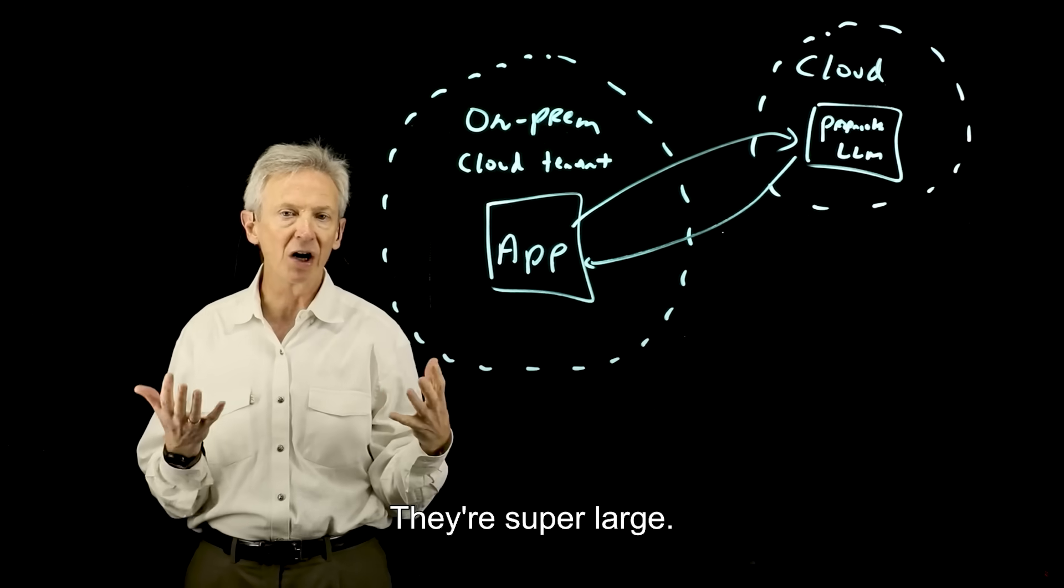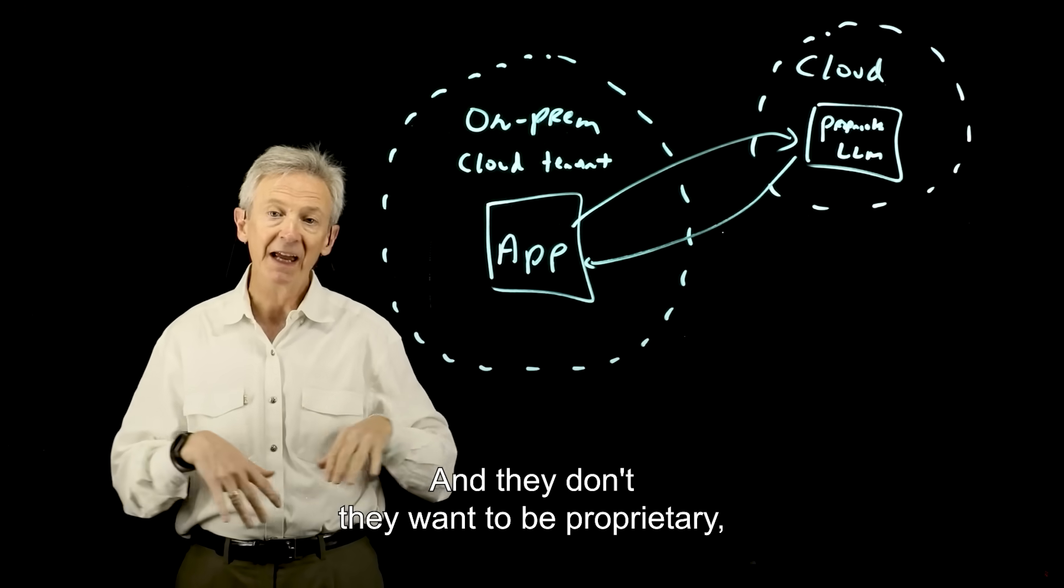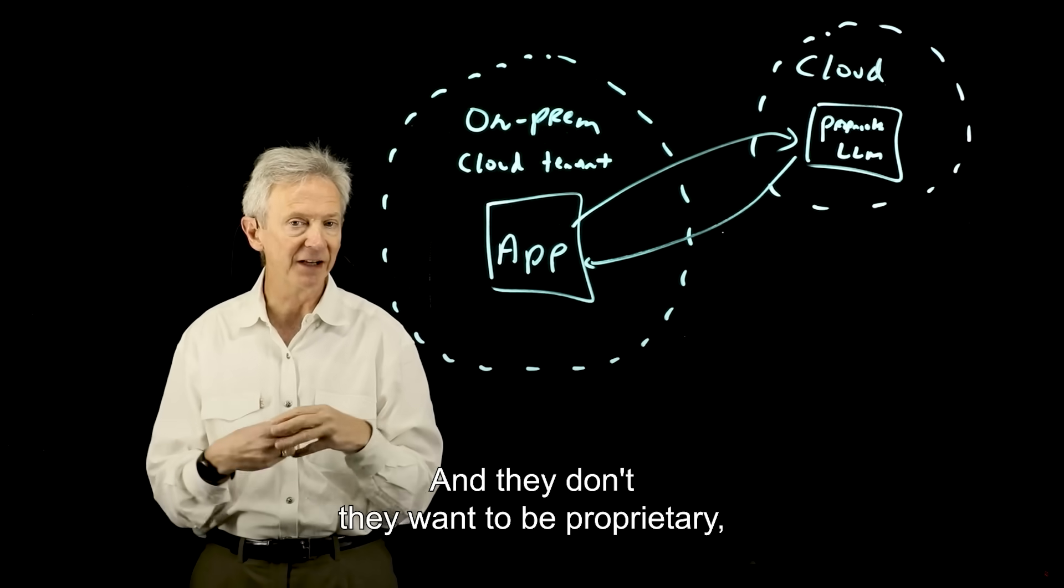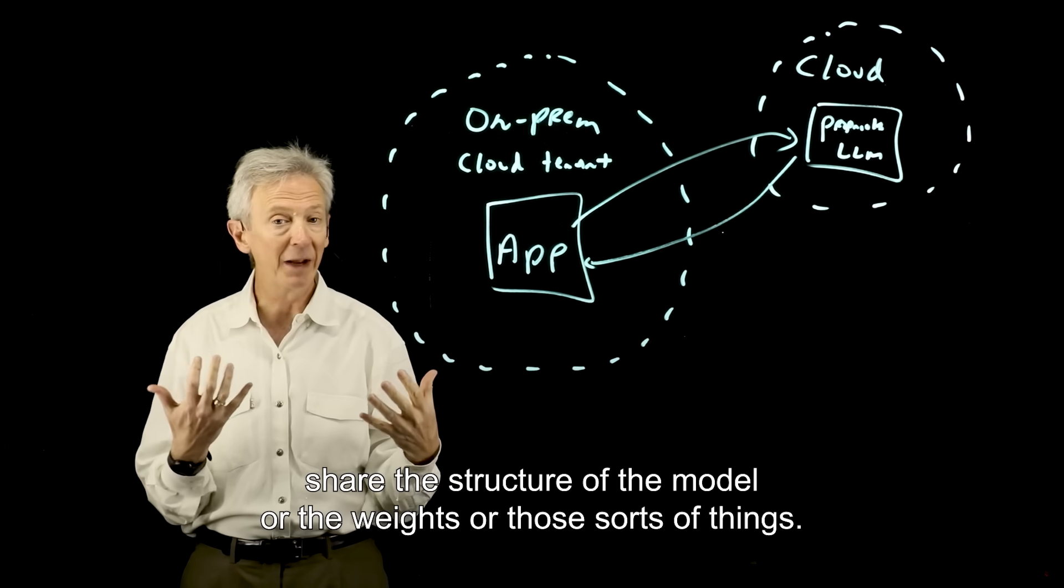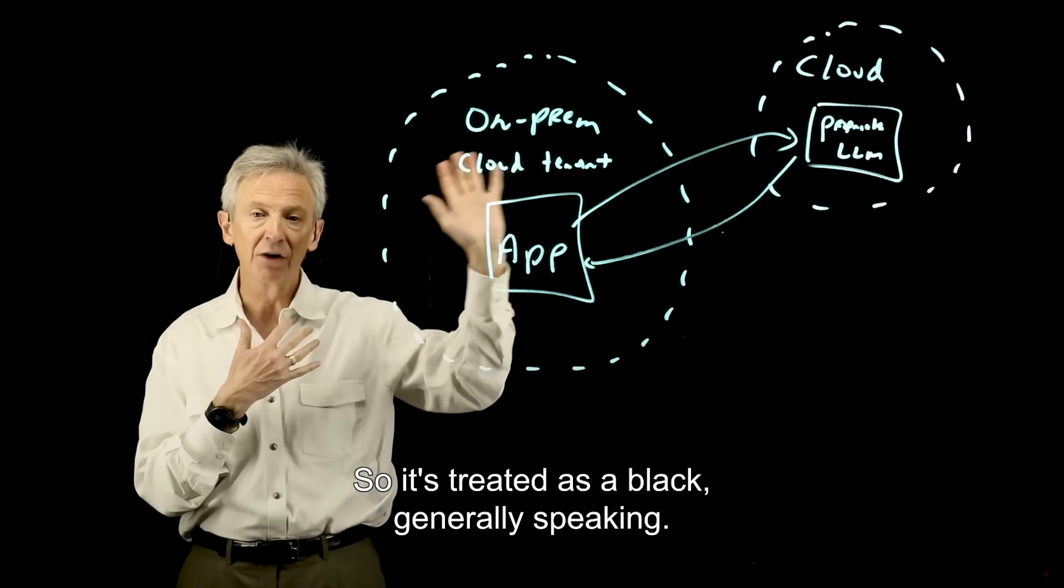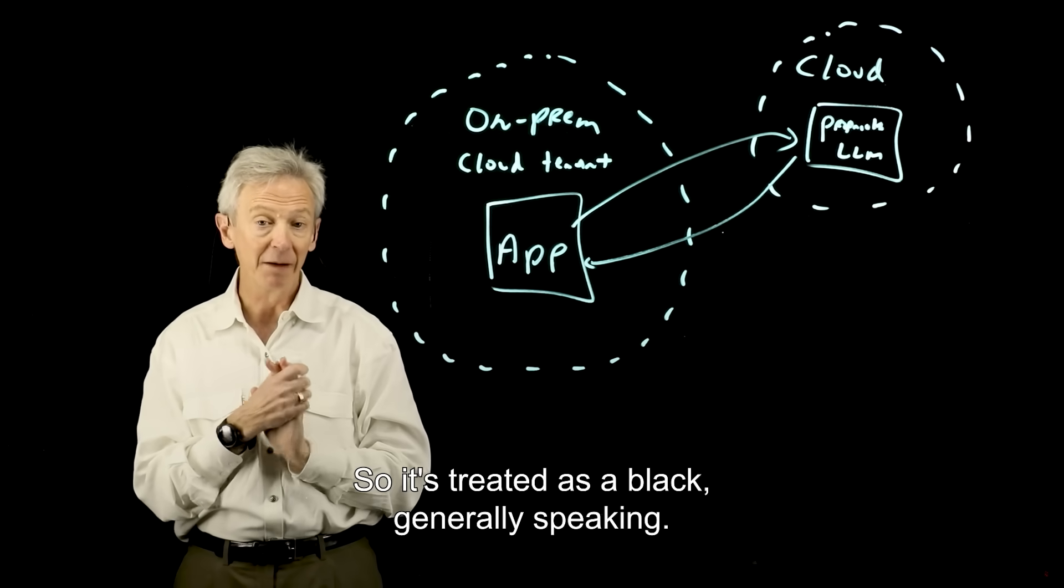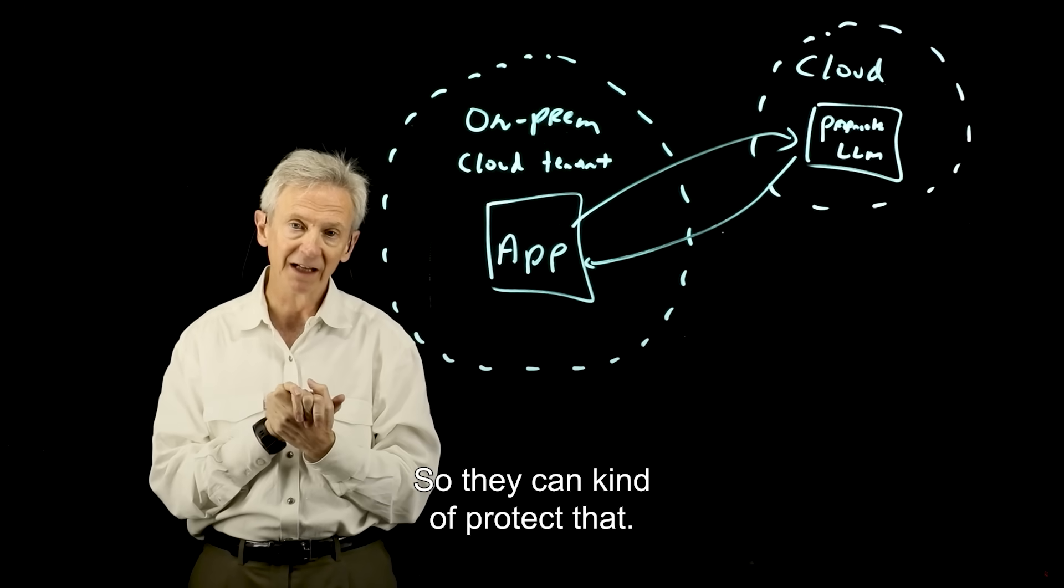They're super large. They take a lot of computers to operate and they want to be proprietary. So they don't want to necessarily share the structure of the model or the weights or those sorts of things. They view it as their secret sauce. So it's treated as a black box, generally speaking, so they can kind of protect that.